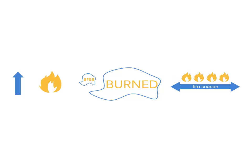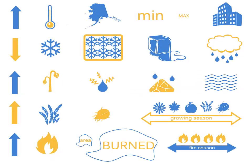Annual area burned in the west has increased since the 1980s, and the length of the fire season is increasing. These changes are actually only a few examples of what is occurring across the United States.